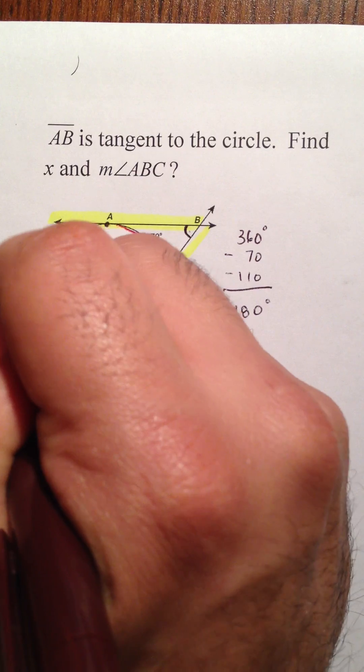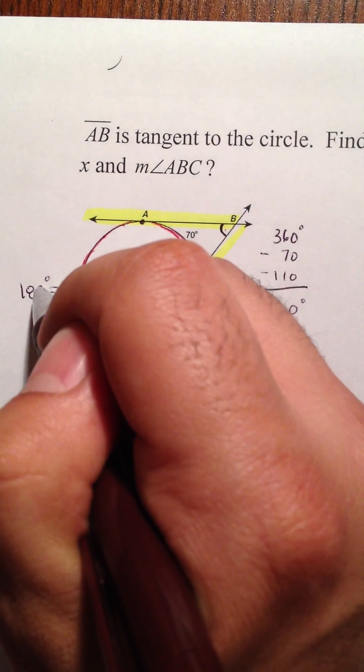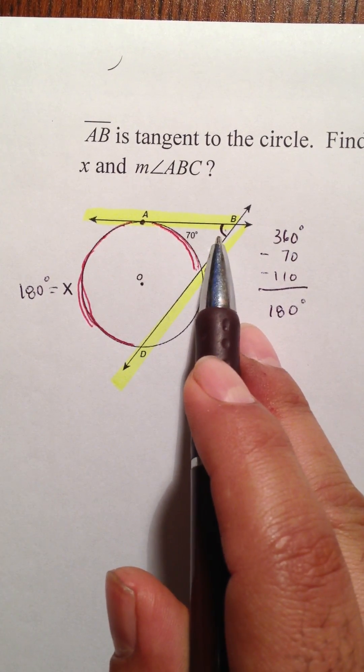Therefore, X is equal to 180 degrees. So, let me move this over. Now, you're able to find this angle ABC.